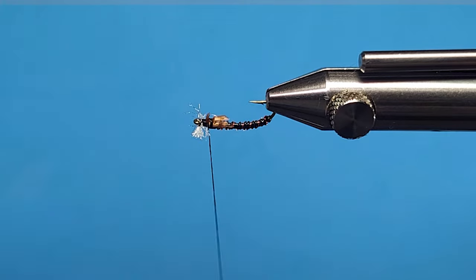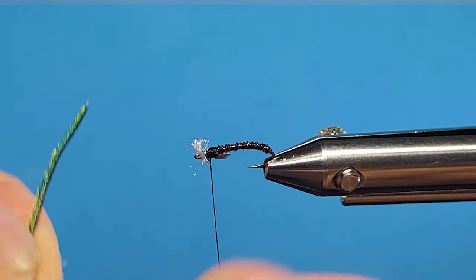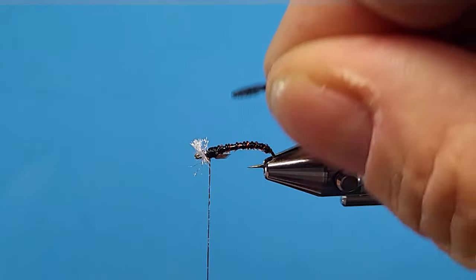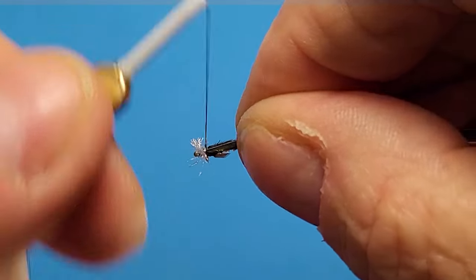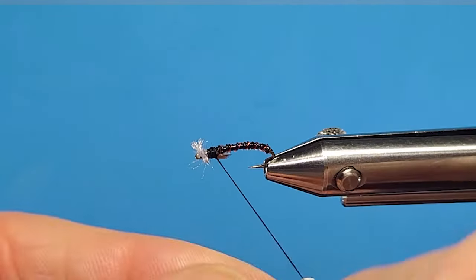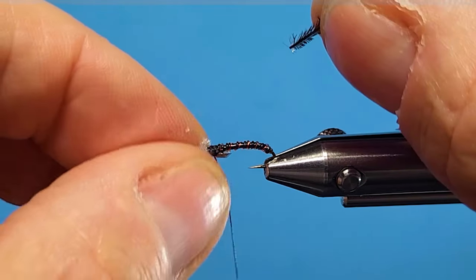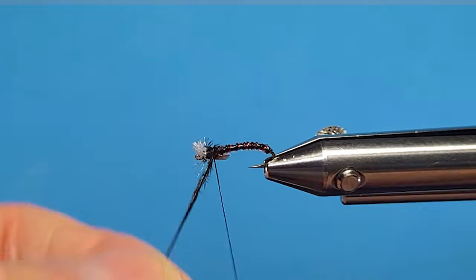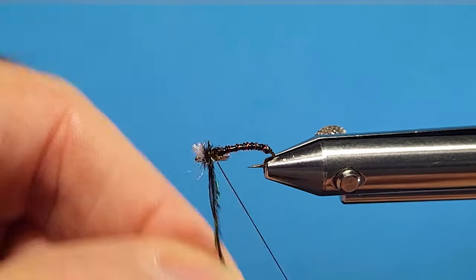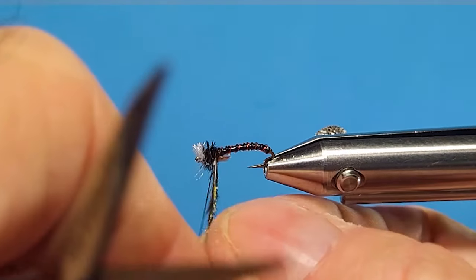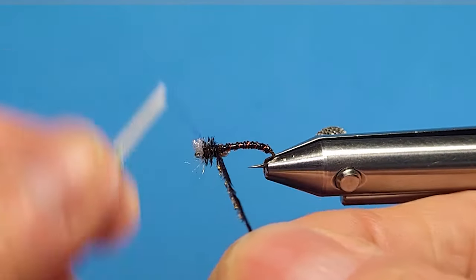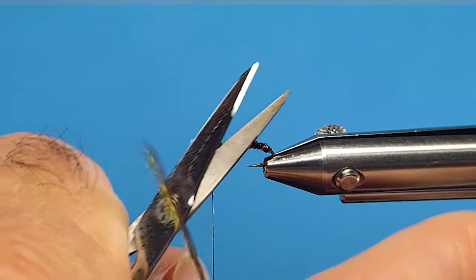And then I just bring in one strand of the peacock hurl kind of finish it up. I like the way that looks. It gets wet. It's a bronzy color, as you know. Peacock hurl is great material. And that'll give me my thorax. I don't lose it. There we go. Right there.